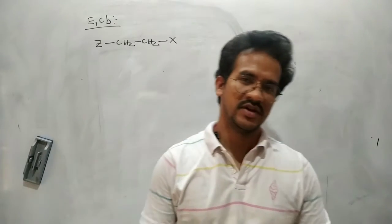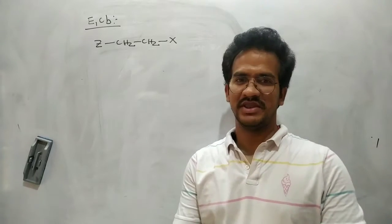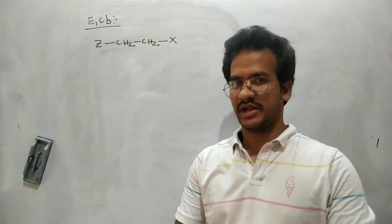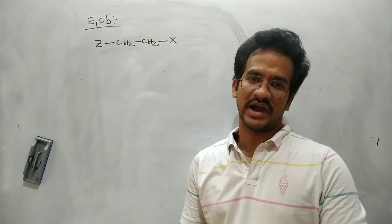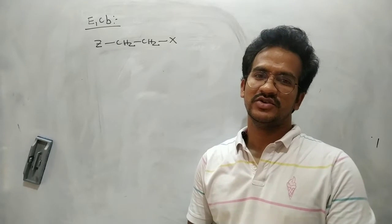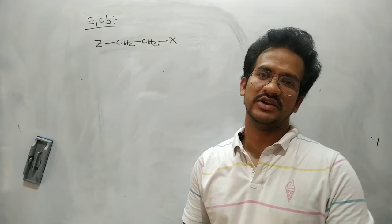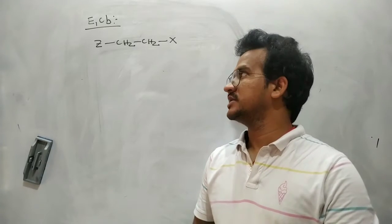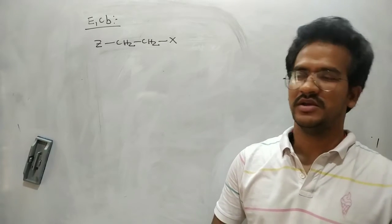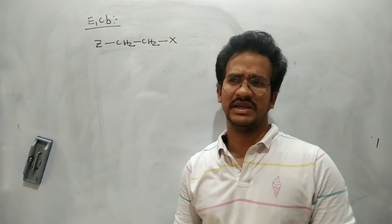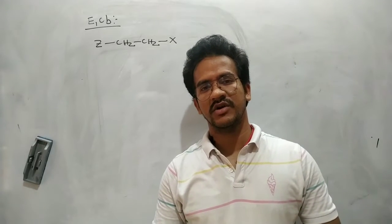Hello students. In this video, we will discuss the E1CB reaction. Generally, there is a deuterium exchange. Hydrogens are replaced by deuterium in an E1CB reaction. If you take a deuterated base and solvent, the hydrogens can be replaced by deuterium along with the elimination. But in an E1 or E2 reaction, deuterium exchange cannot be seen.